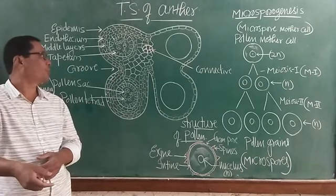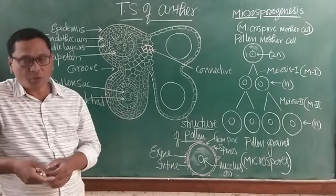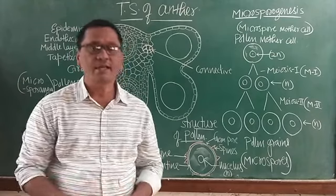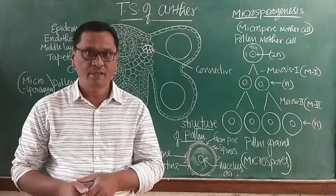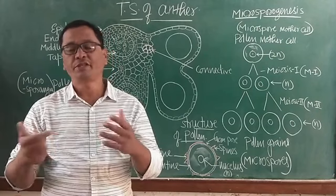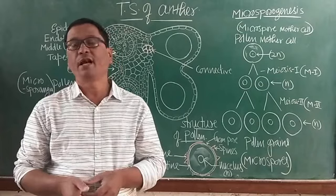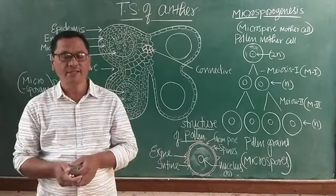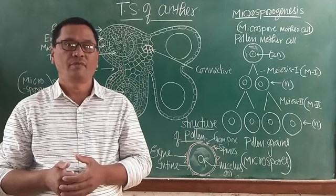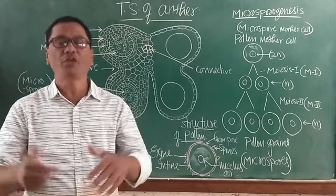The male and female reproductive systems in a flower are the androecium and gynoecium. Androecium is the male reproductive system, whereas gynoecium is the female reproductive one. Androecium consists of stamens; gynoecium consists of carpels. Androecium is responsible for the production of pollen grains and the male gametes, whereas gynoecium is essential for the production of female gametes. Gynoecium: carpel — ovary, style, stigma — and within the ovule, the female gametes.